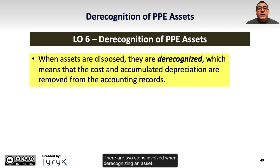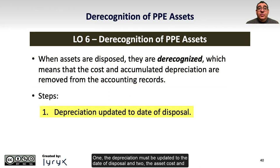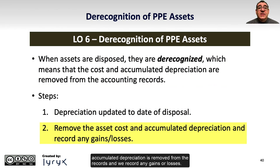There are two steps involved when derecognizing an asset. One, the depreciation must be updated to the date of disposal, and two, the asset cost and accumulated depreciation is removed from the records, and we record any gains or losses.